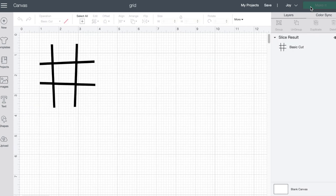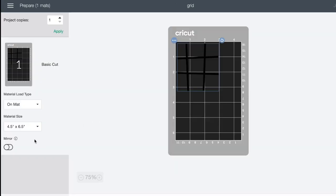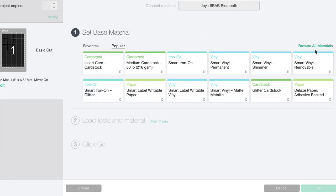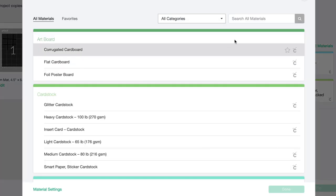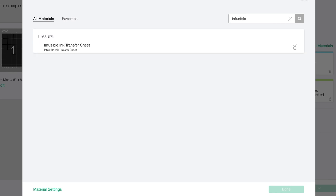So I'll go ahead and hit Make It. And then this time I will be using a mat and I'm going to hit the Mirror, because you always want to mirror everything that you're making when you're using Infusible Ink, which is what I'll be doing right now. So we can hit Continue and then I'll search for the Infusible Ink transfer sheets because that's what I'm going to be using. And there it is right there.